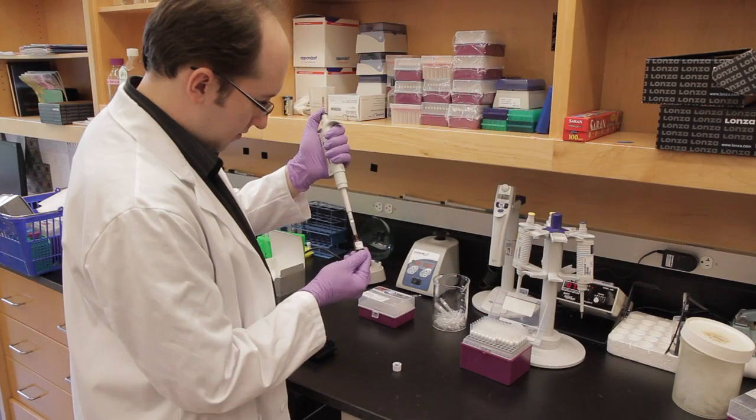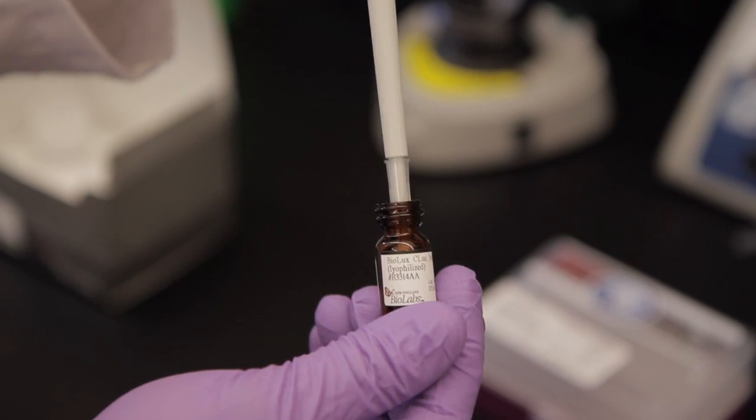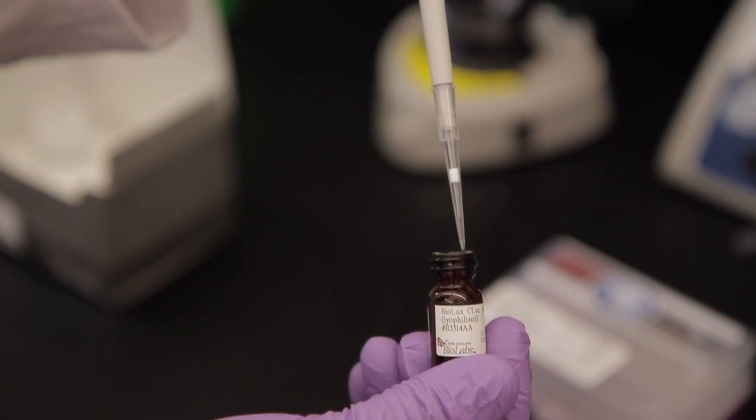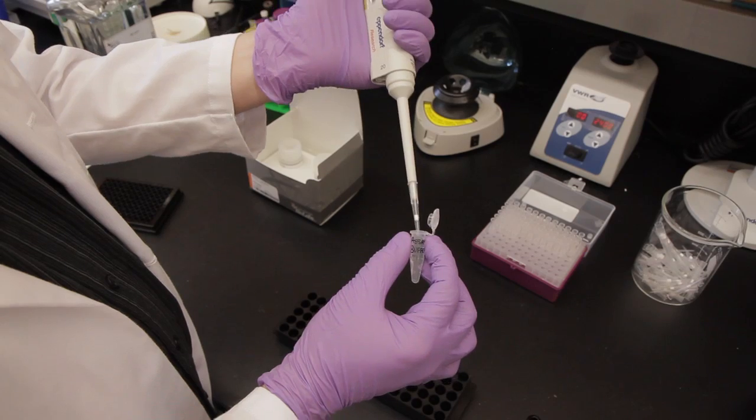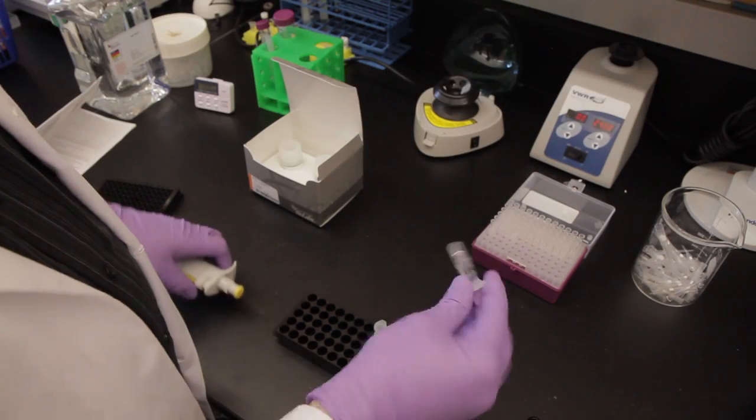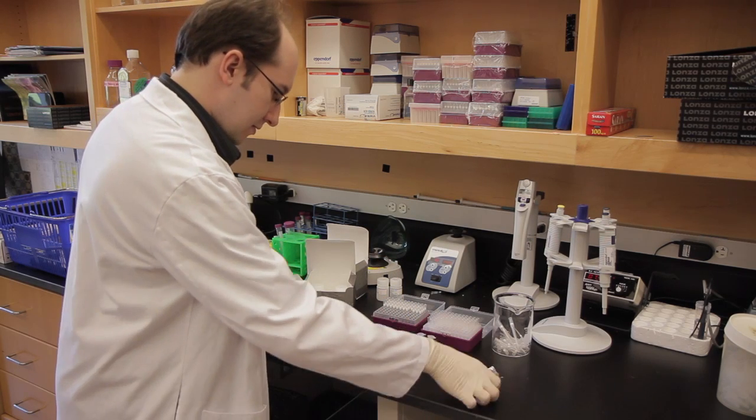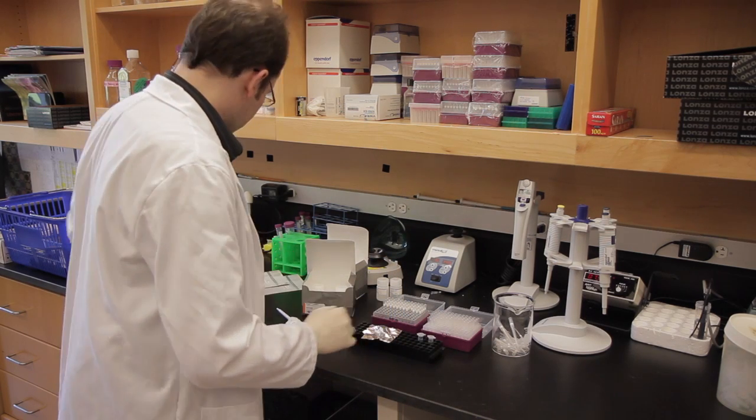For the CLUC assay, prepare 100X freshly reconstituted substrate. Then make the assay solution by adding 15 microliters of the reconstituted substrate to 1.5 milliliters of BioLux Cypridina Luciferase Assay Buffer. Mix the CLUC assay solution without vortexing and incubate it at room temperature for 30 minutes away from the light.